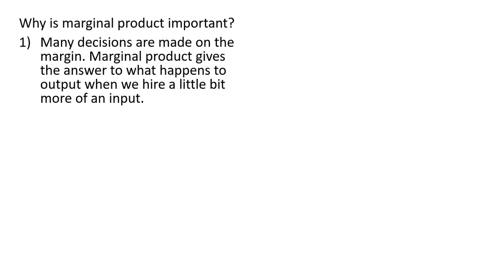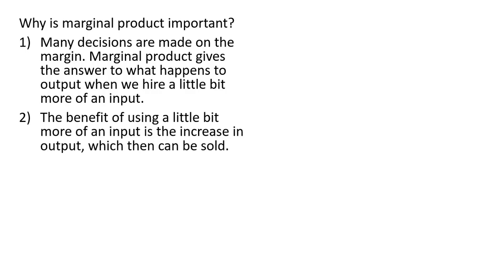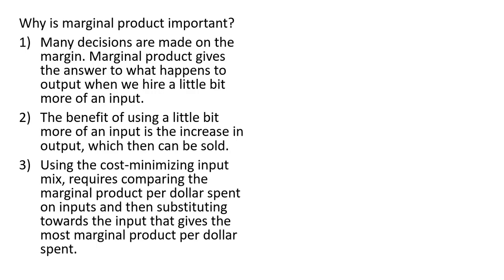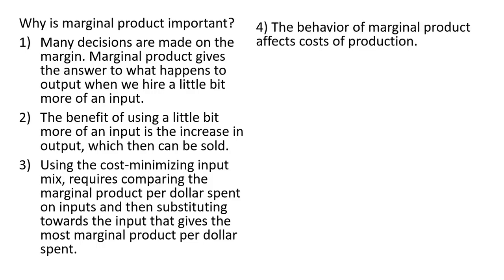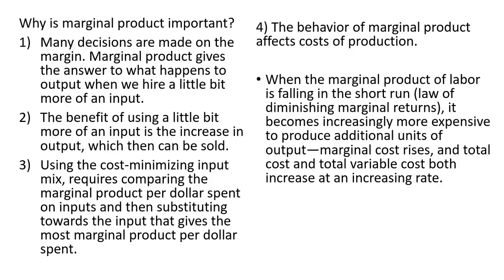Why is marginal product important? Many decisions are made on the margin. Marginal product gives the answer to what happens to output when we hire a little bit more of an input. The benefit of using a little bit more of an input is the increase in output, which the firm can then later sell. Using the cost-minimizing input mix requires comparing marginal product per dollar spent on inputs and then substituting towards the input that gives the most marginal product per dollar spent. The behavior of marginal product affects the firm's cost. When the marginal product of labor is falling in the short run because of diminishing marginal returns, it becomes increasingly more expensive to produce additional units of output. Marginal cost rises and total cost and total variable cost both increase at an increasing rate.